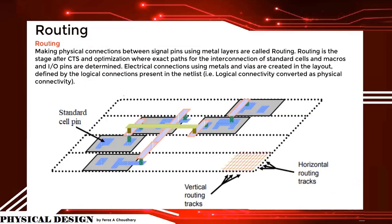Routing means making physical connections between signal pins using metal and vias. It is the stage after CTS and optimization, where exact paths for the interconnection of standard cells, macros, and IO pins are determined. Electrical connections using metal and vias are created in the layout, defined by the logical connections present in the netlist — that is, logical connectivity converted to physical connectivity.